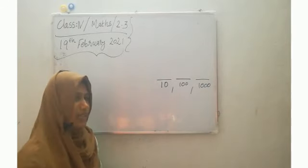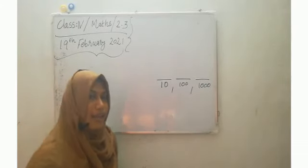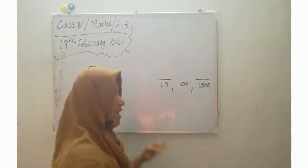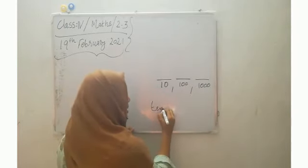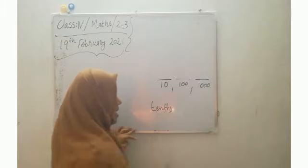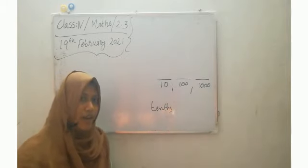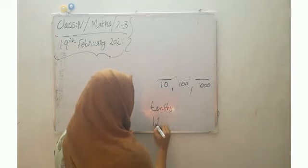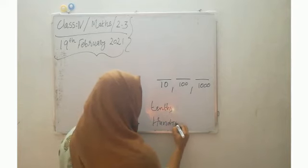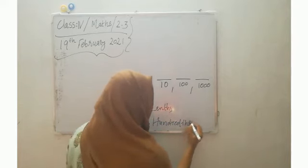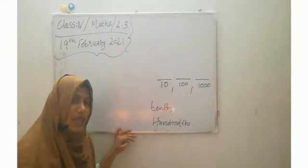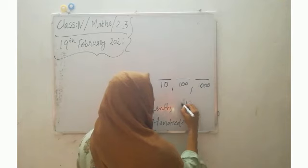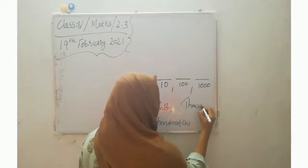When the denominator is ten, we can call it as tens place — T-E-N-T-H-S. When it is of hundred, it is hundreds place. And students, when it is thousand, we can call it as thousands place.